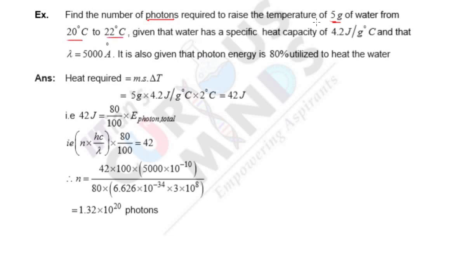Given that water has a specific heat capacity of 4.2 Joules per gram per degree Celsius, and the wavelength is 5000 angstrom. It is also given that the photon energy is 80% utilized to heat the water.